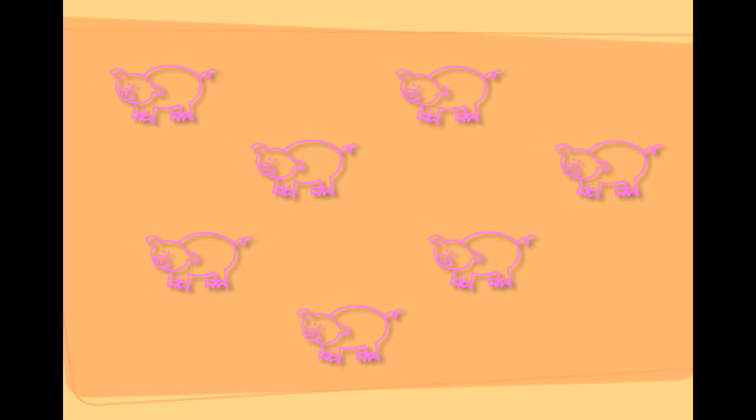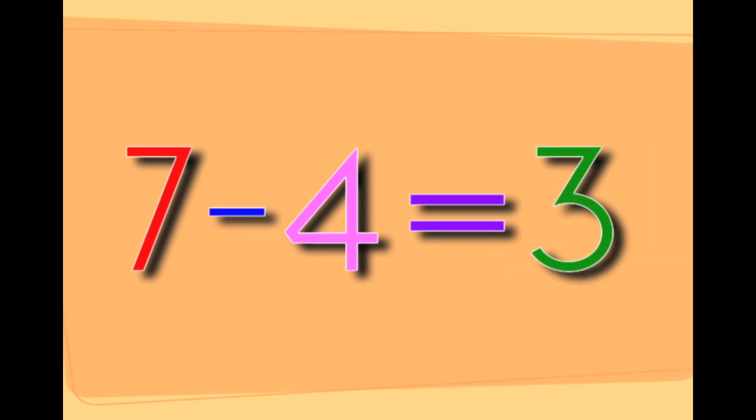This is seven pigs. Taking four pigs away from the seven pigs leaves you with three pigs. Seven minus four equals three.